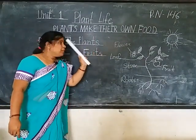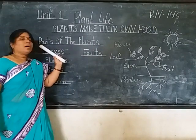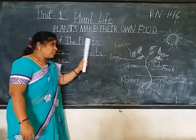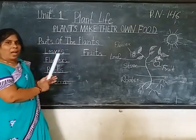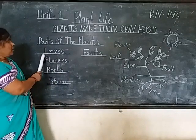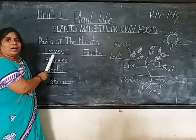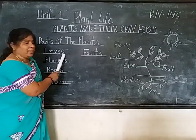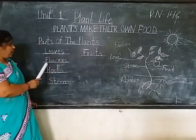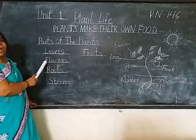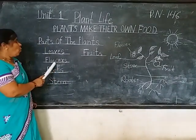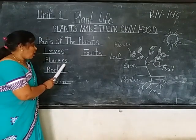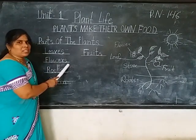But before we talk about the parts of the plants, first: leaves — L, E, A, V, E, S — leaves. Second: flowers — F, L, O, W, E, R, S — flowers.